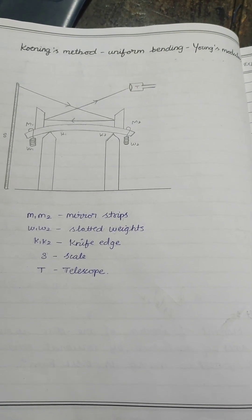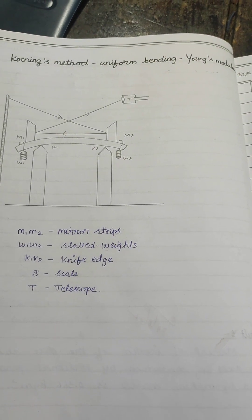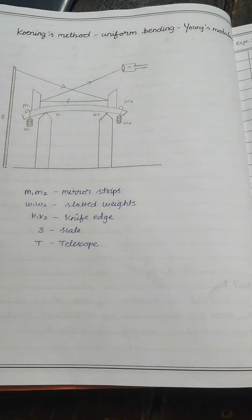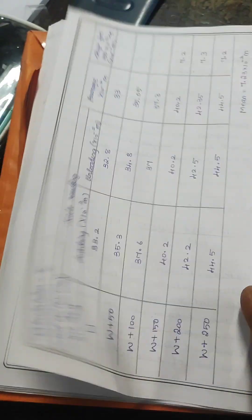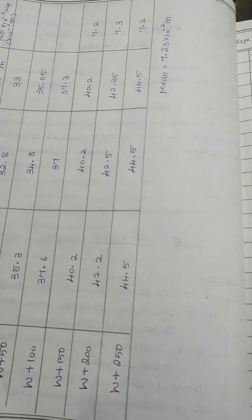Here, m1 and m2 are mirror strips, w1 and w2 are slotted weights, k1 and k2 are knife edges, s is the scale, and t is the telescope. We use these components for the measurement.